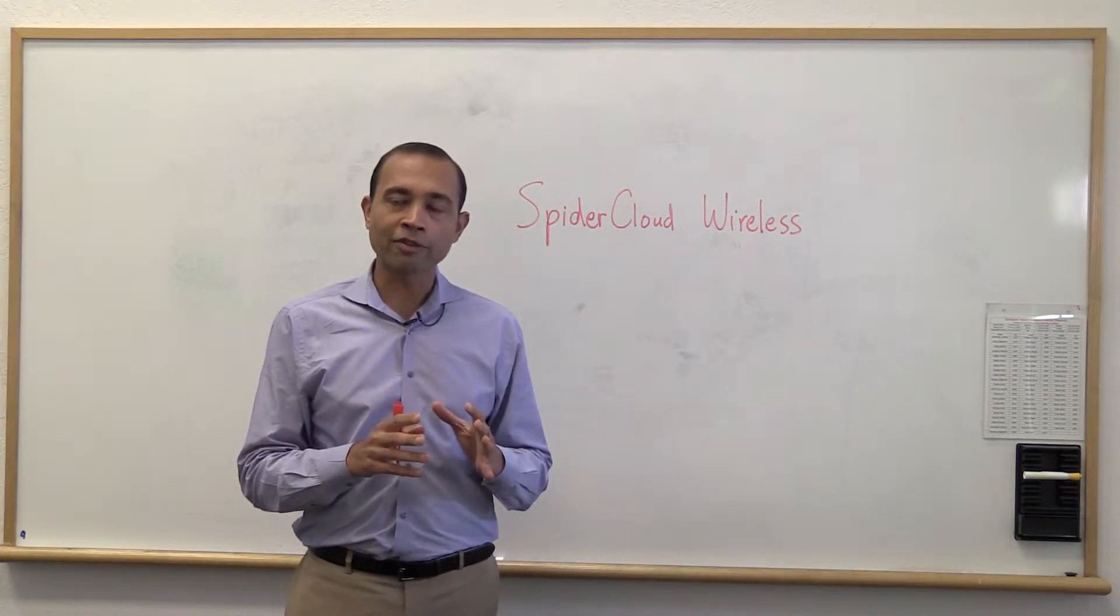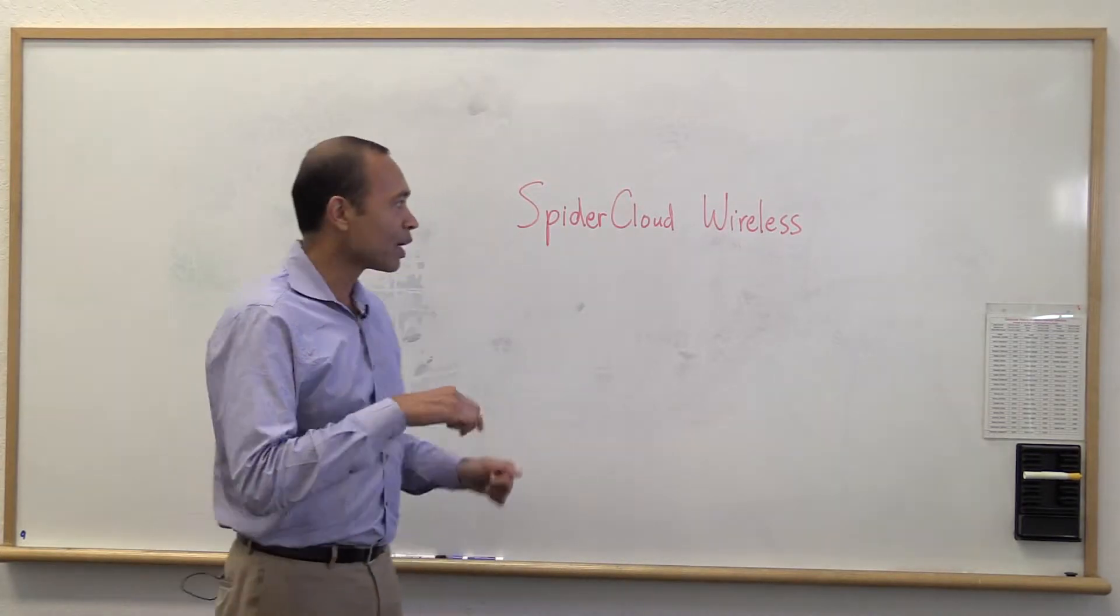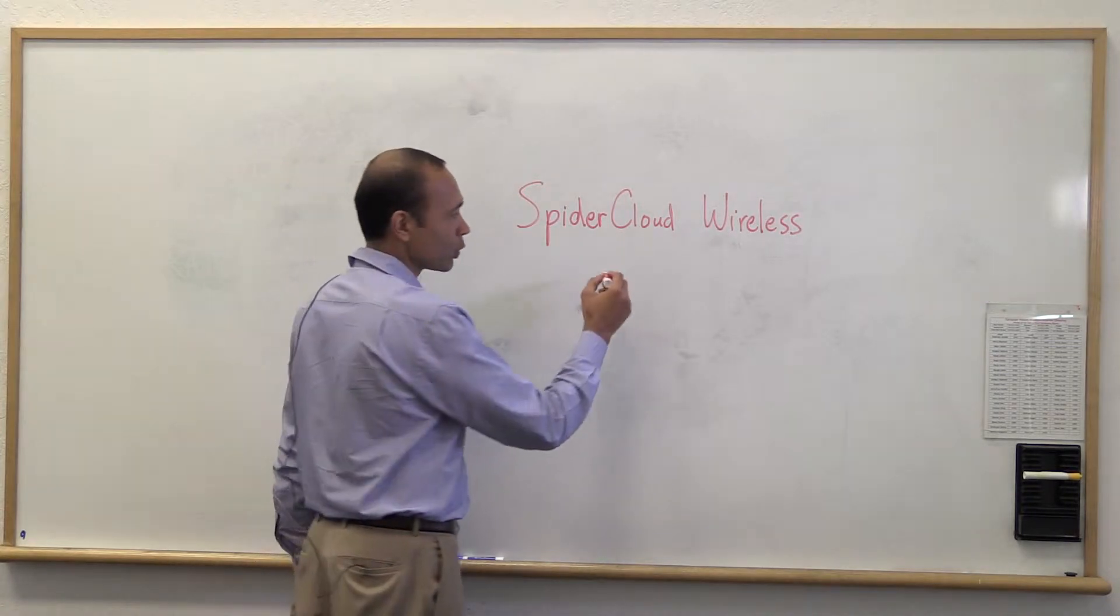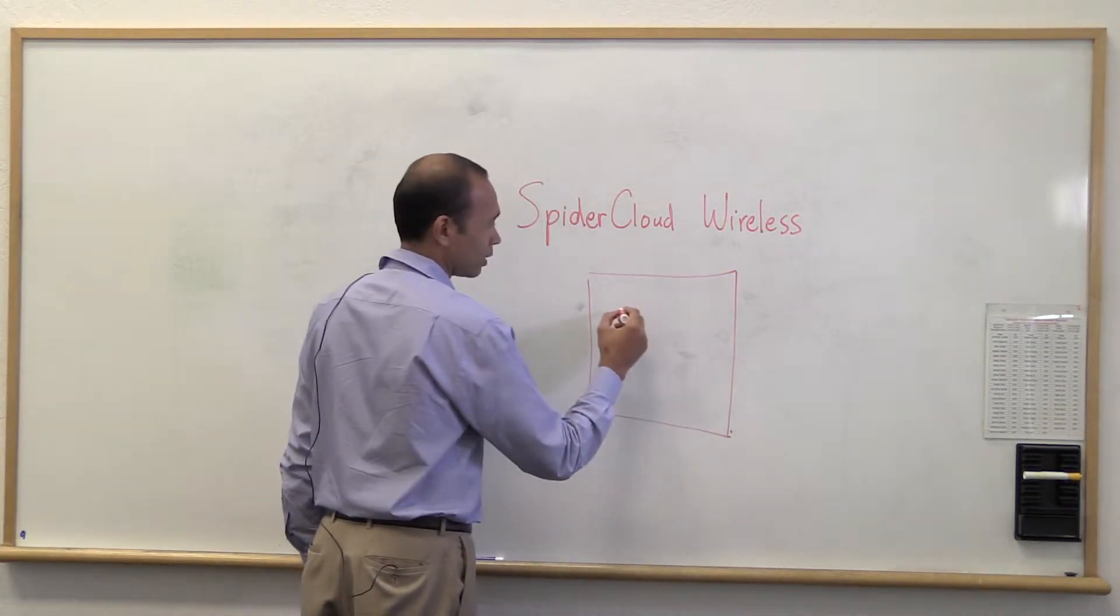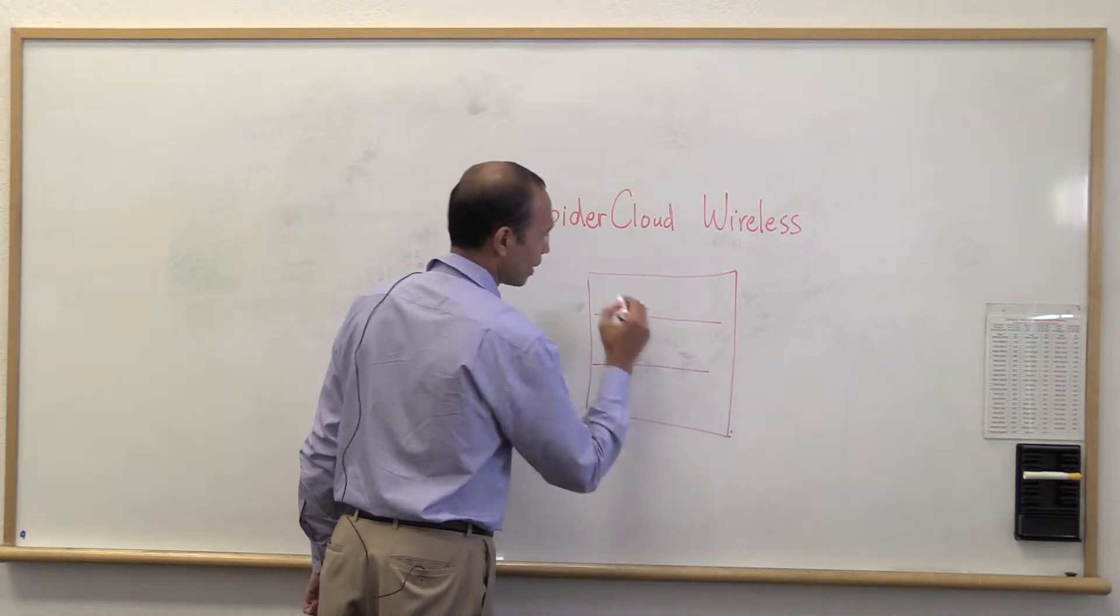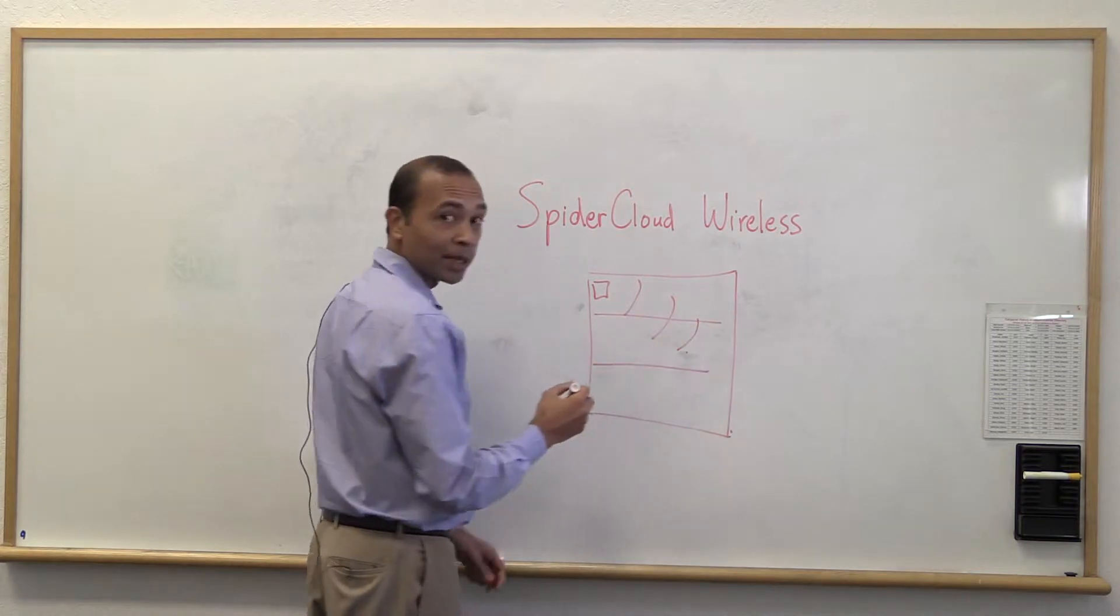The way we are different from traditional small cells is that we actually build a network of small cells. So imagine with a traditional small cell you would go into a large building and probably put maybe one small cell here and then expect that this small cell would cover the entire building.